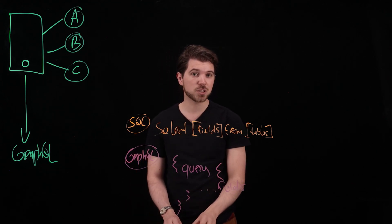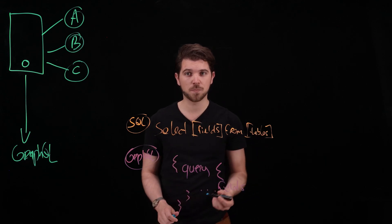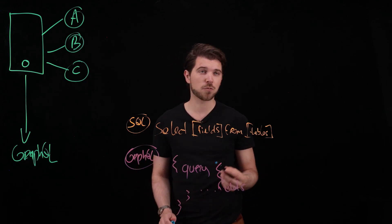So the way GraphQL is able to do this is by having a type system. The type system is defined in the GraphQL schema.